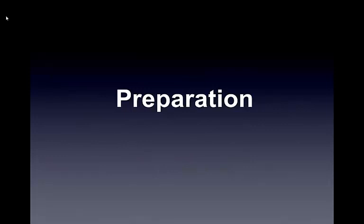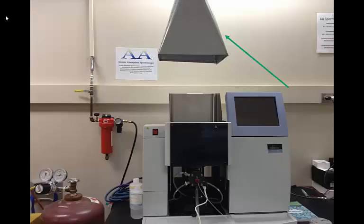Before we can think about starting this instrument up, we need to look at some important safety considerations. In the last lesson, we looked at the hood situated over the atomic absorption spectrophotometer. That hood is there to remove any metal vapors being produced by the instrument, since metal vapors can be very toxic if inhaled. However, just the presence of the fume hood by itself is not sufficient to ensure safety.